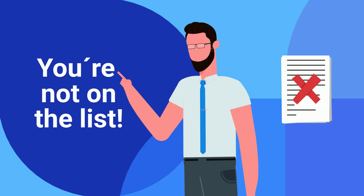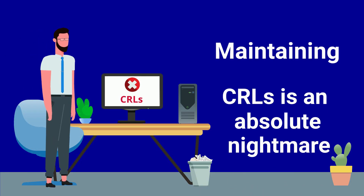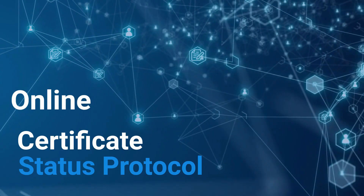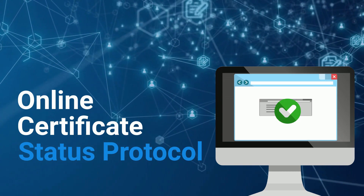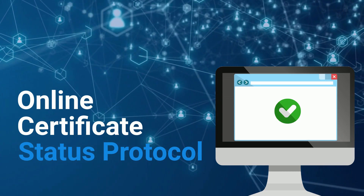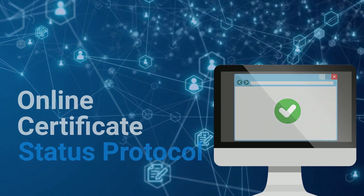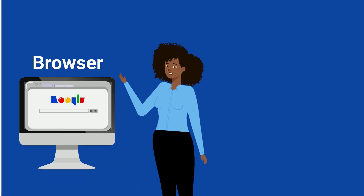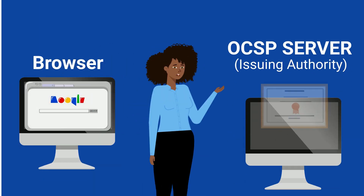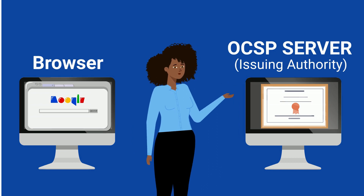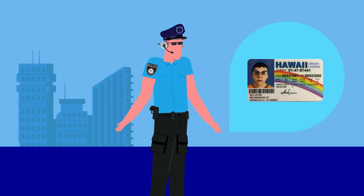But here's the catch — maintaining CRLs can be an absolute nightmare. Enter OCSP, or Online Certificate Status Protocol, a streamlined solution for the modern developer. With OCSP, your browser directly asks the OCSP server appointed by the issuing authority, "Hey, is this certificate still valid?" It's a bit like checking with the police to see if the ID is actually real.